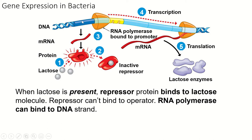Now RNA polymerase can bind to the strand of DNA and transcribe all of the genes involved. That creates a strand of mRNA that is read by ribosomes to create the proteins that are enzymes to break down lactose. When the lactose runs out, the enzymes have a very high affinity for lactose — a higher affinity than the repressor. So the enzyme takes the lactose from the repressor. The repressor, no longer bound to lactose, changes shape again and is now the right shape to bind to the DNA, preventing RNA polymerase from transcribing the gene anymore.